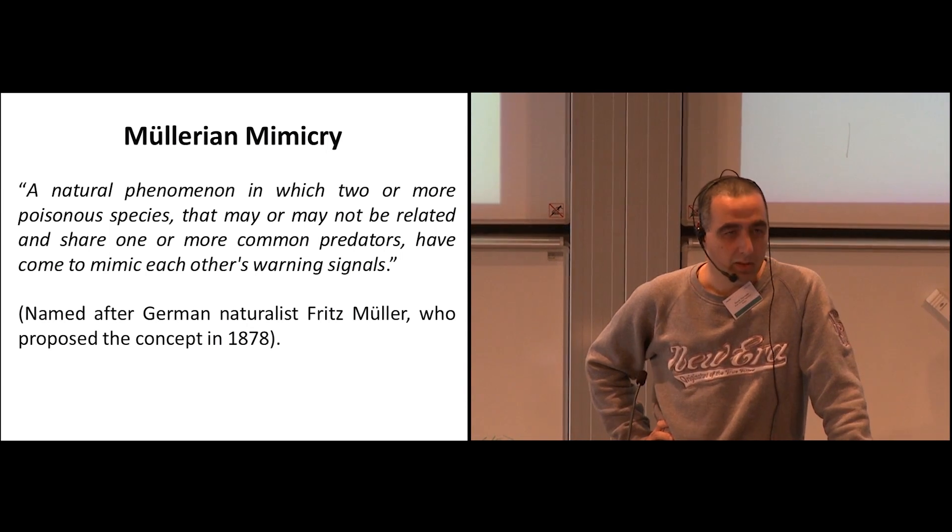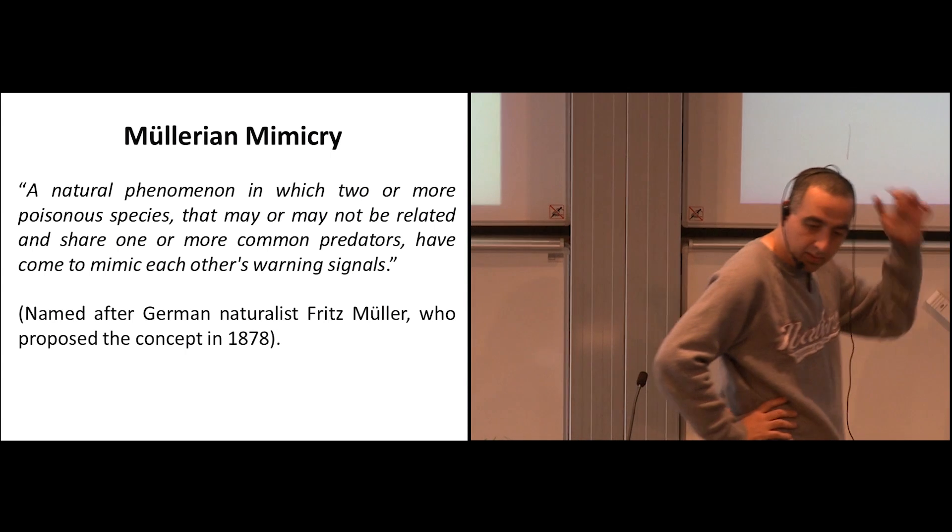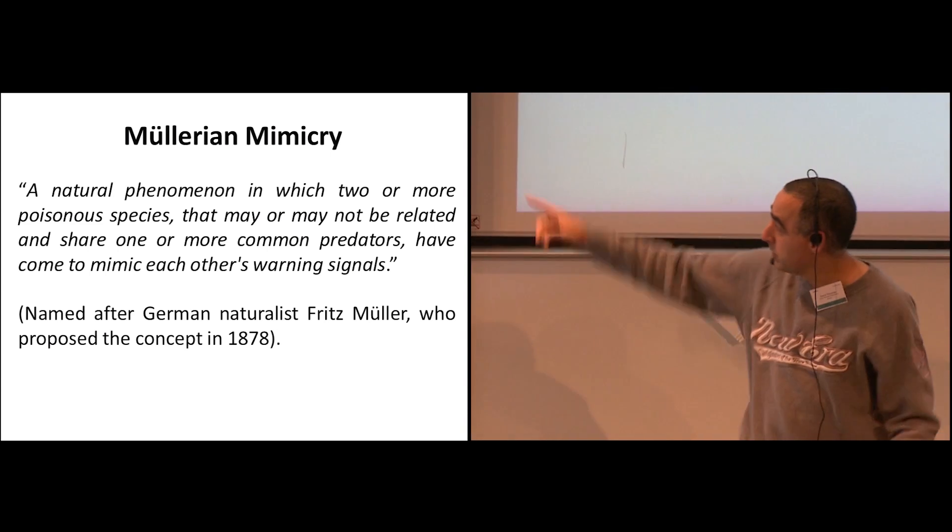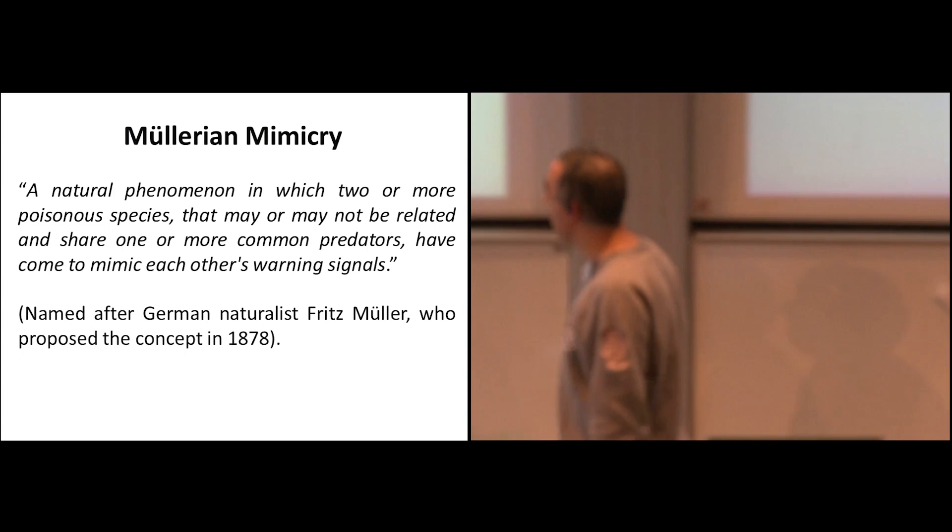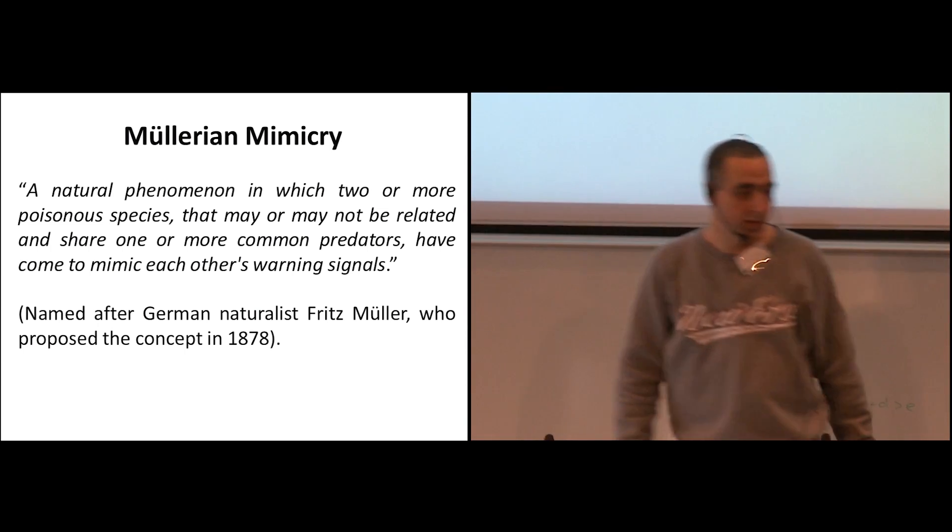It is called Müllerian mimicry. So what is Müllerian mimicry? It is something that was discovered very early at 1878 in a paper by a German naturalist called Müller, hence the name.